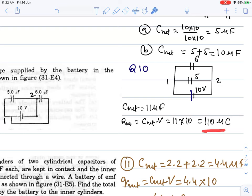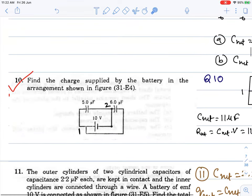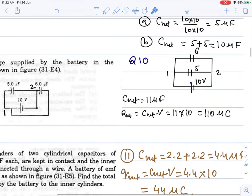So the net charge supplied is 110 microcoulombs. That's all. In the next class, we are going to continue with more problems.